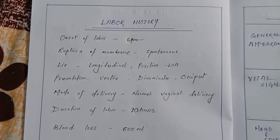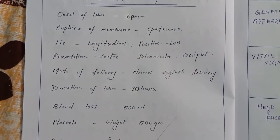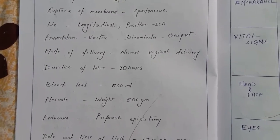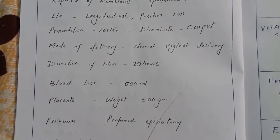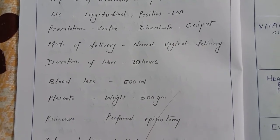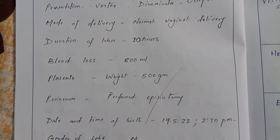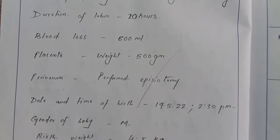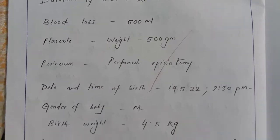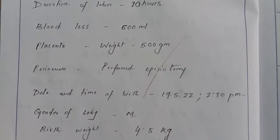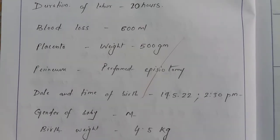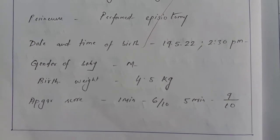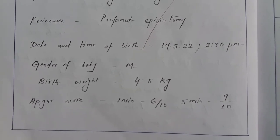Labor history: onset of labor 6 PM, rupture of membrane spontaneous, lie longitudinal, position LOA (left occiput anterior), presentation vertex, denominator occiput, mode of delivery normal vaginal delivery, duration of labor 20 hours, blood loss 600 mL, placenta weight 500 grams, episiotomy performed, date and time of birth 19-5-2022 at 2:30 PM.